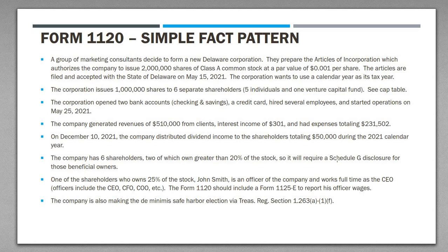The company has six shareholders, two of whom own greater than 20% of the stock. That's relevant because shareholders owning greater than 20% require additional disclosures on the tax return — Schedule G must be included with the Form 1120. One of those shareholders, John Smith, owns 25% of the stock and is also an officer of the company, working full-time as CEO. When you have officers being compensated and you meet revenue thresholds, the Form 1120 needs to include Form 1125-E to separately report those wages.